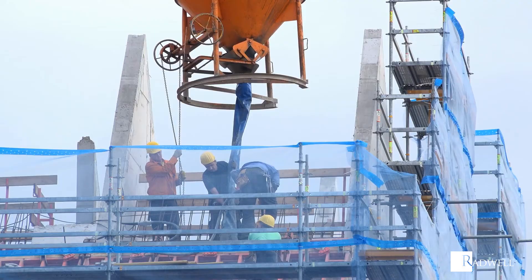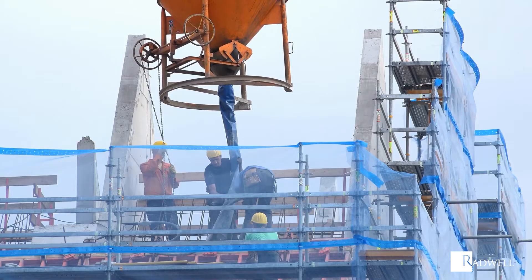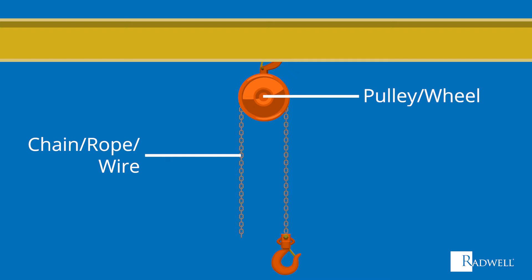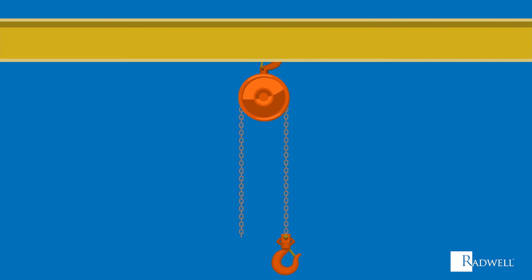The biggest similarity between these three devices is their purpose: to ease the moving and lifting of heavy objects. A fixed pulley is the simplest of the three. As its name implies, the pulley is fixed in one spot and remains stationary as it operates. A fixed pulley is made up of three main components: one wheel and a chain, rope, or wire that has a hook attached to it.